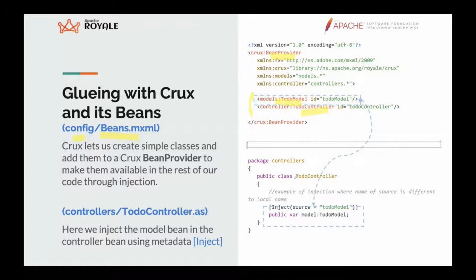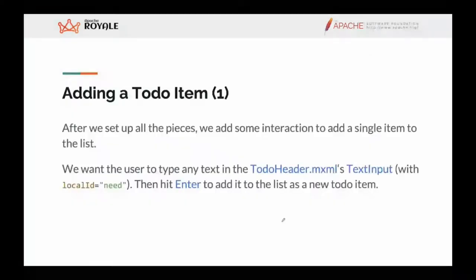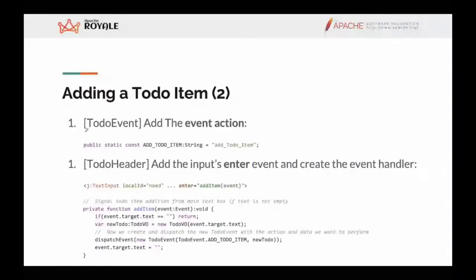The next thing to cover is the to-do item interaction — how to set up adding one single item to the list. We use the to-do header and text input, and when we hit Enter in the text input we generate a series of actions. First we use the to-do event — we need to add this action to the file, since Crux needs to know all the constants in this to-do event to register and then be able to react to those events.